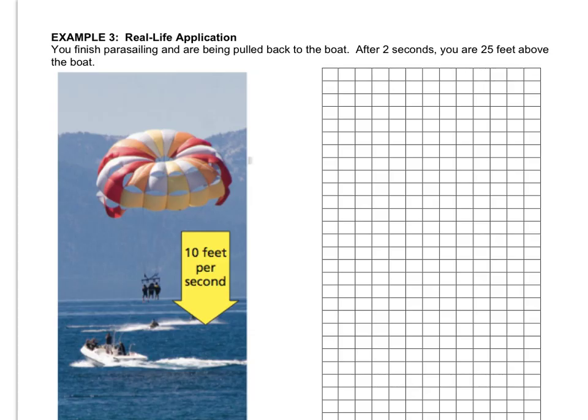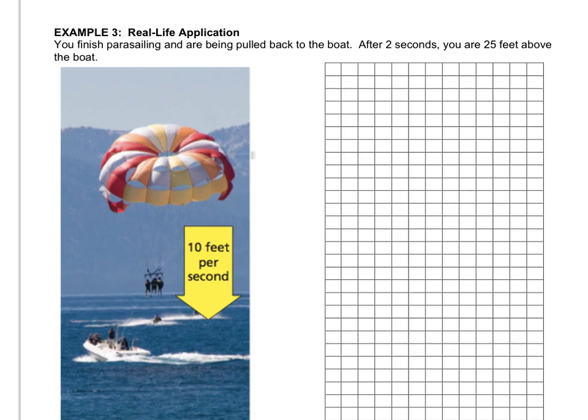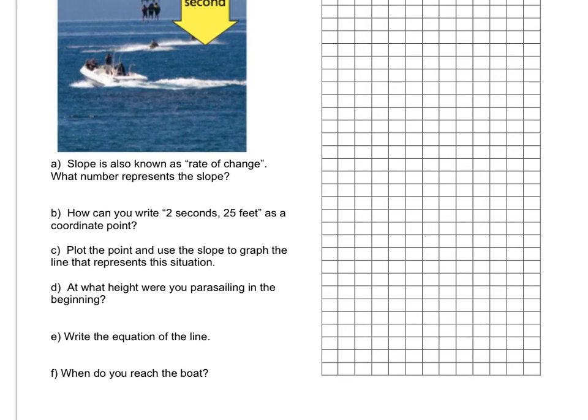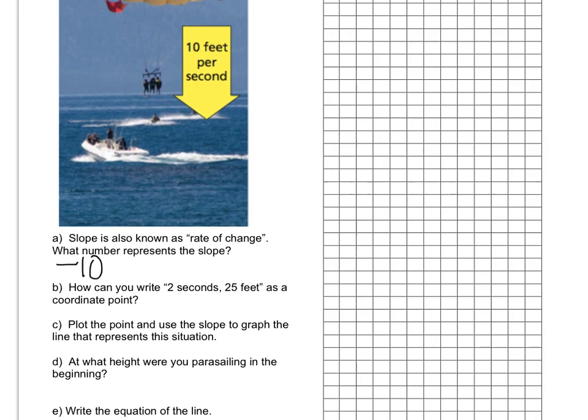Let's check out this example. You've finished parasailing and are being pulled back to the boat. So here's a picture of someone parasailing. After 2 seconds, you are 25 feet above the boat. So you were up here in the air and then you started falling, and 2 seconds after you started falling, you're at 25 feet. So I've got this grid here. We'll use that in a minute. Let's check out some of the questions that I created for you. Slope is known as rate of change. What number in this example represents the slope? The answer is -10 because you're changing at 10 feet per second. This is your rate of change. And since it's going down, it's negative.